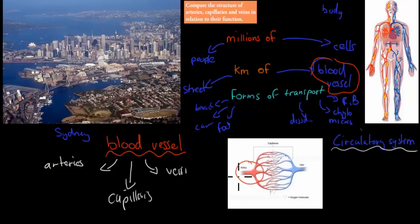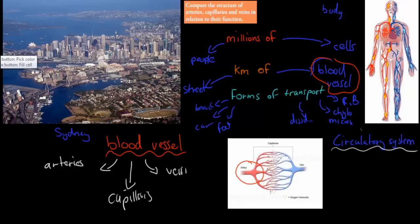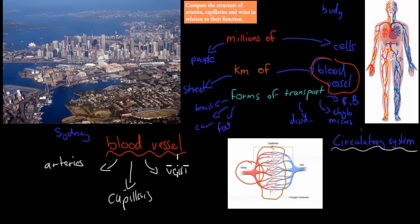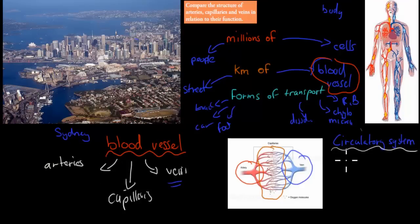Arteries are like our highways — quite thick, transporting blood at really high speeds. But they don't deliver directly to cells; it's our capillaries that do that. Capillaries are much smaller but have access to all cells, just like side streets reach all homes. Veins are also large, similar to highways, and they transport blood back to our heart. Together, these make up our circulatory system.